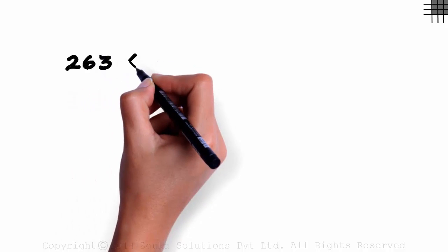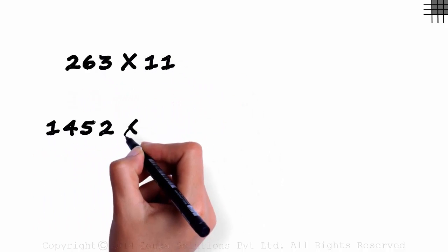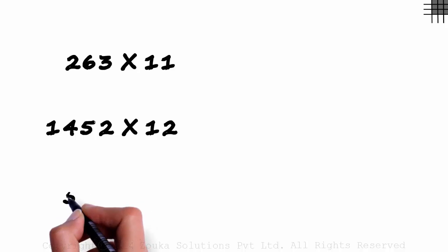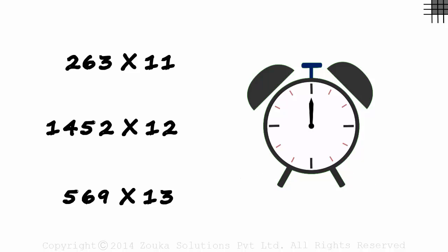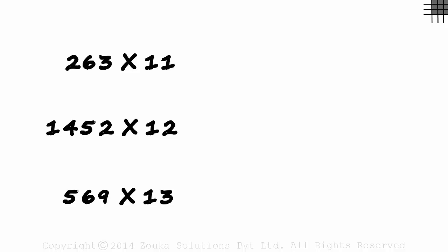Try out these three examples to check if you have really understood the shortcuts. 263 times 11, 1452 times 12 and 569 times 13. I give you 20 seconds. Go! Let's see if you got the right answers.